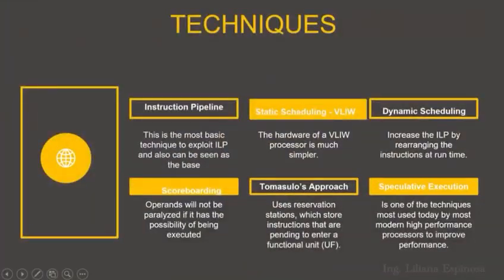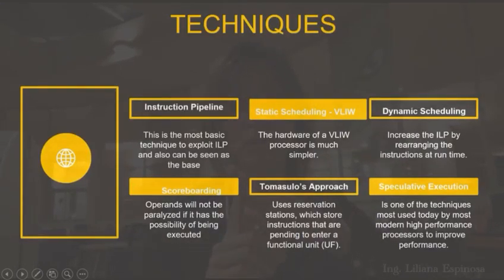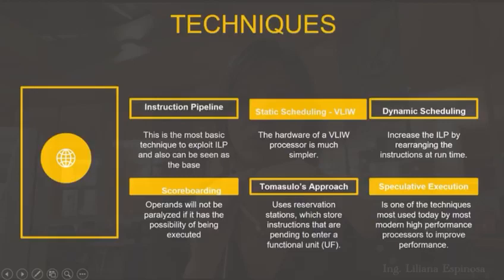So what are the techniques for exploiting ILP? The first and most basic — but also the foundation of other techniques — is the instruction pipeline. In a pipeline, several instructions are executed across several stages in the processor without overlapping. Generally we find four stages: fetch, decode, execute, and write. Every single instruction is going to be in one of these stages, one per clock cycle.